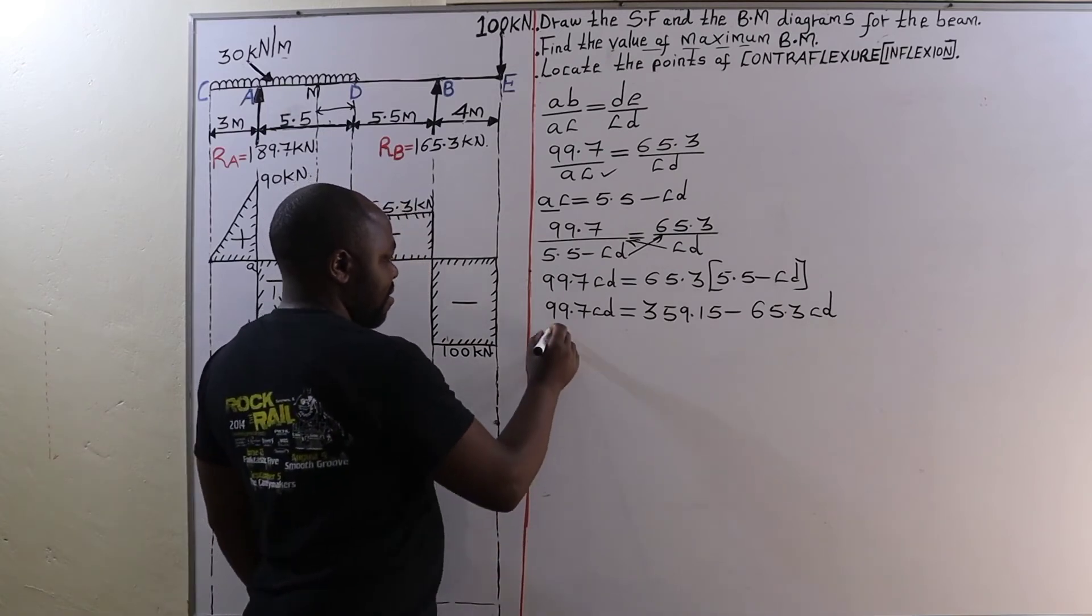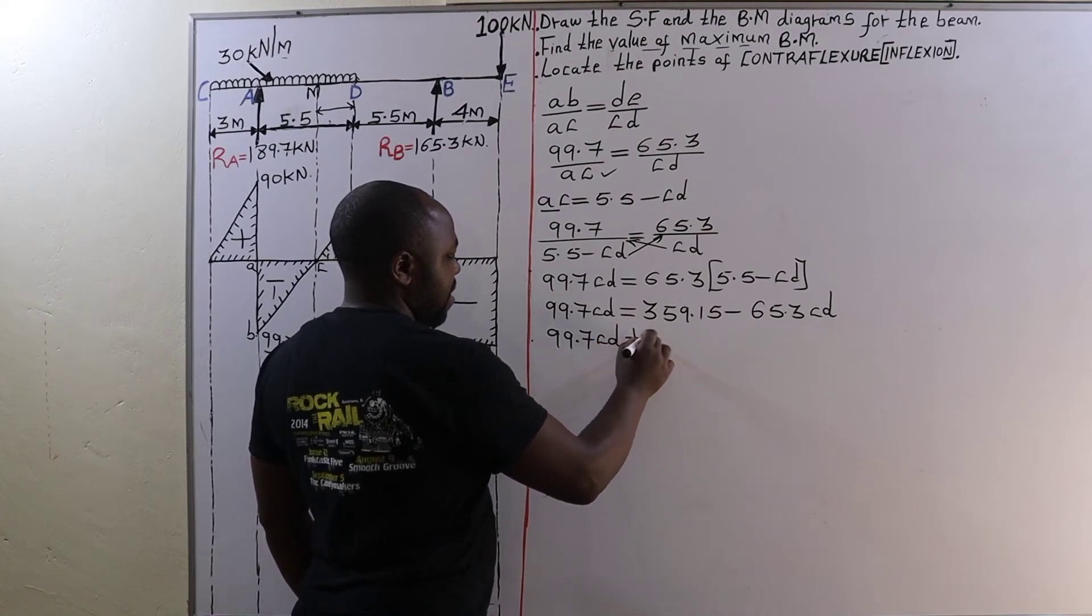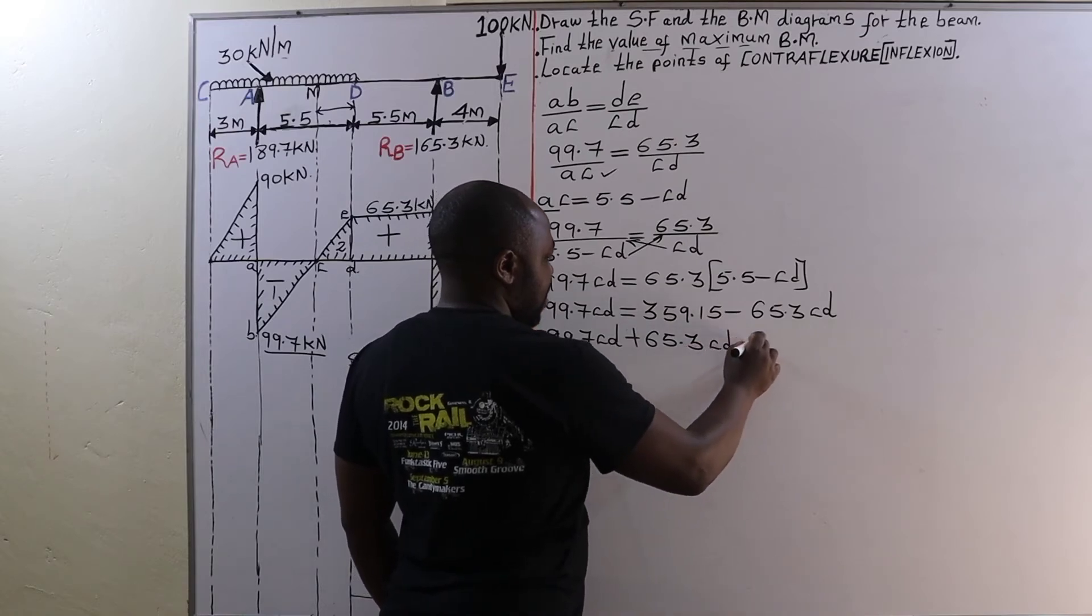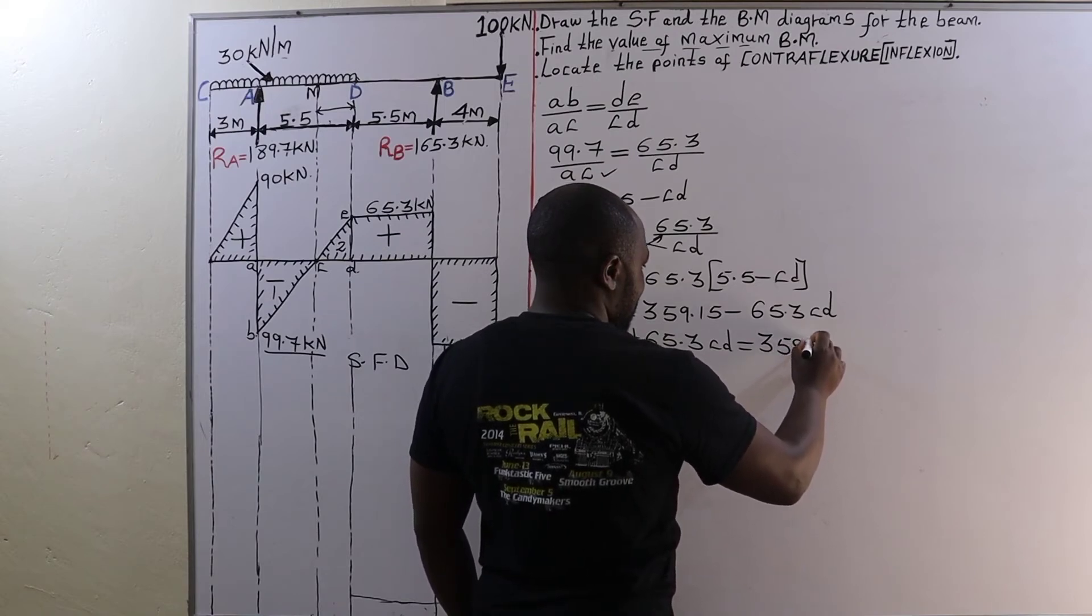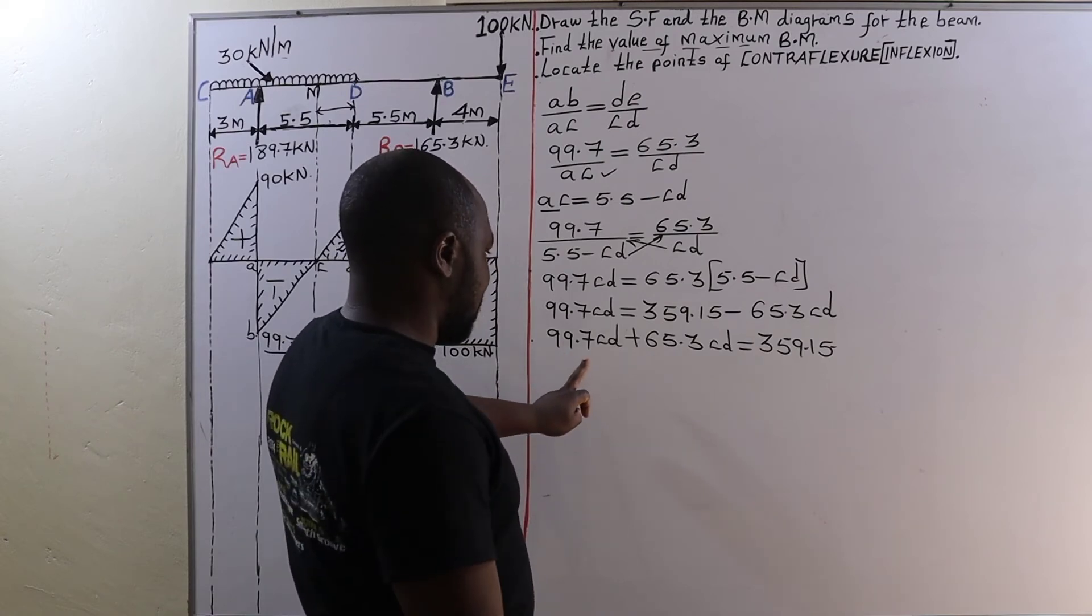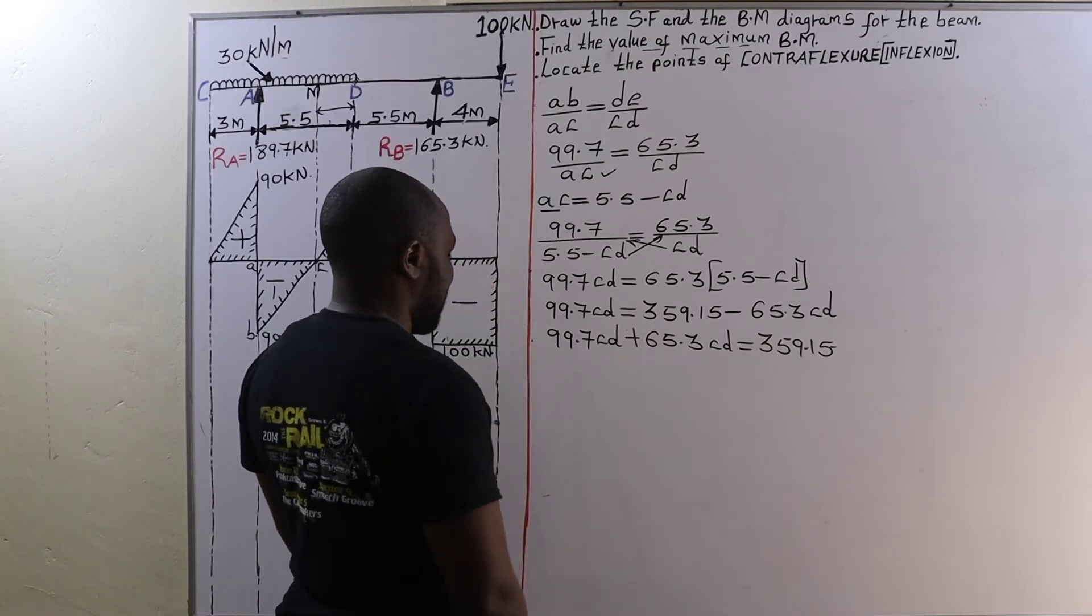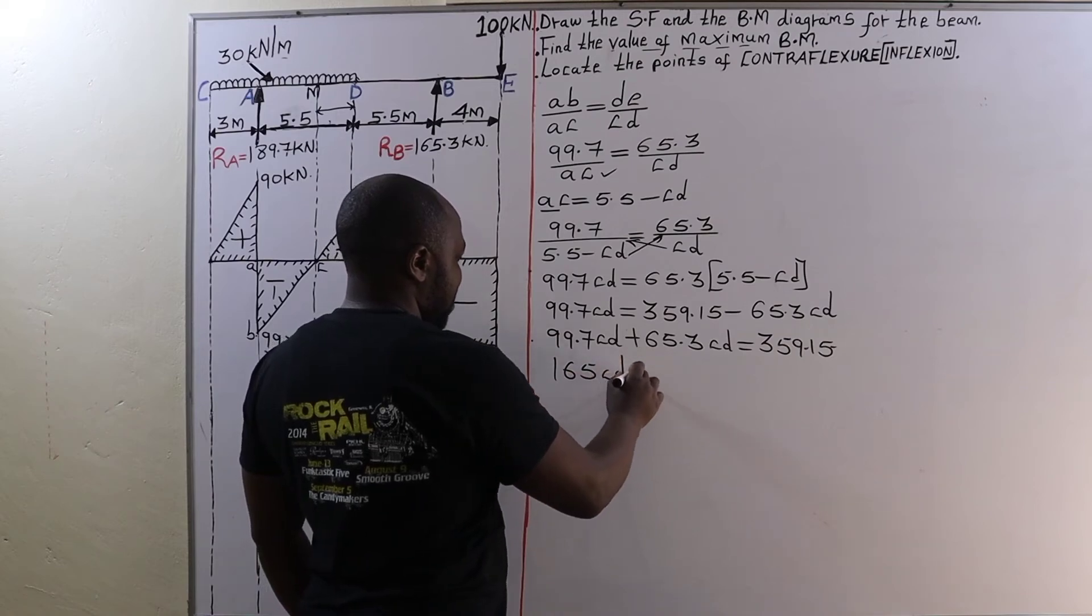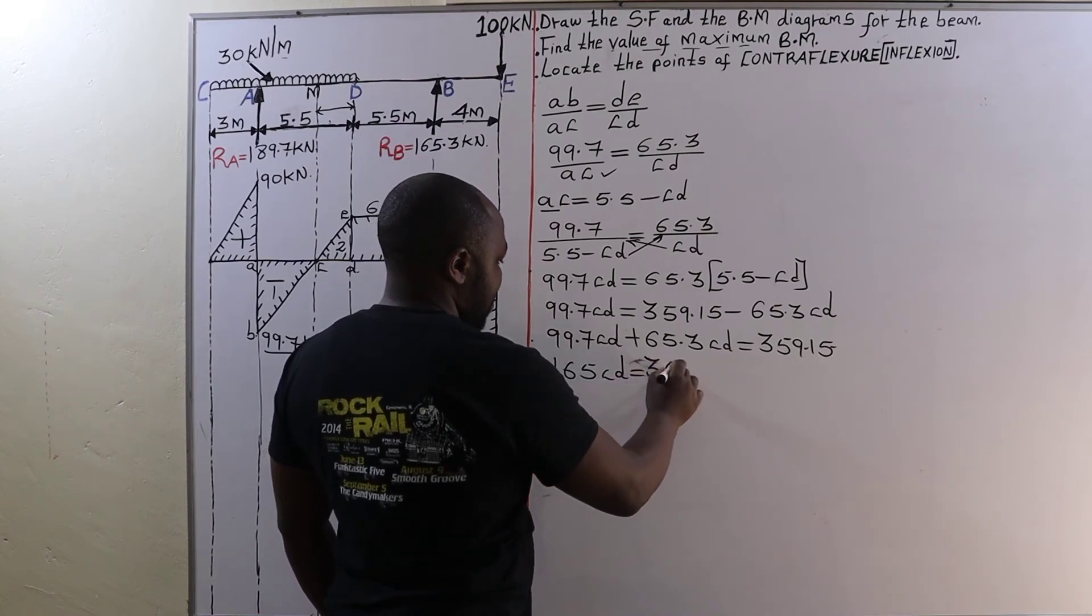We bring CD to the left side of the equal sign, which will be 99.7 CD plus 65.3 CD is equal to 359.15. Now the sum of these two, that is 99.7 plus 65.3, that is going to give us 165. Therefore 165 CD is equal to 359.15.